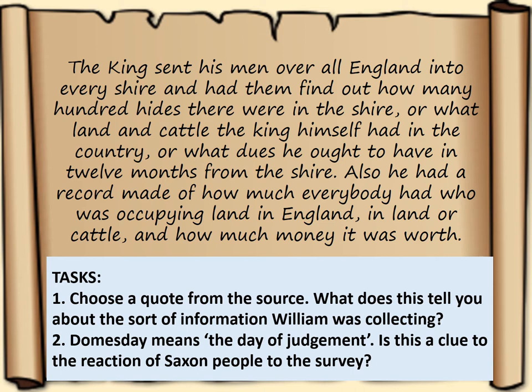One quote worth recording is: 'He had a record made of how much everybody had who was occupying land in England, in land or cattle.' This shows that land and livestock are some of the main measures of wealth, not just taxation and money. The number of names listed is also remarkable — ordinary peasants' names weren't recorded, but the number was. It tells us how many Saxons lost land during the Norman takeover; typically you'll see a Saxon name as having held land in King Edward's time, then replaced almost always by a Norman name.